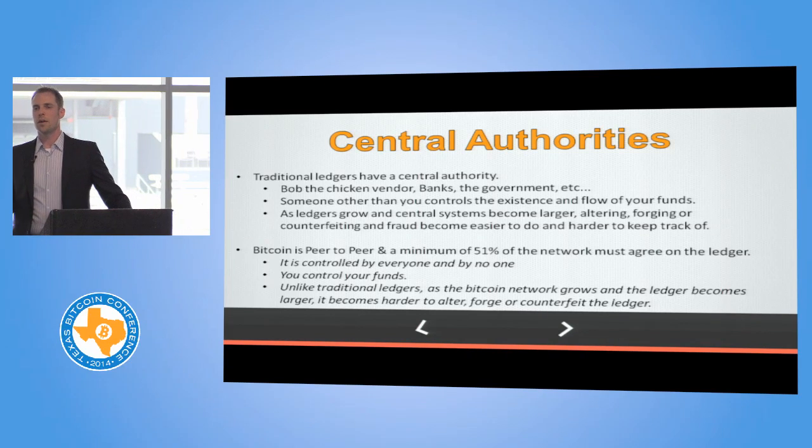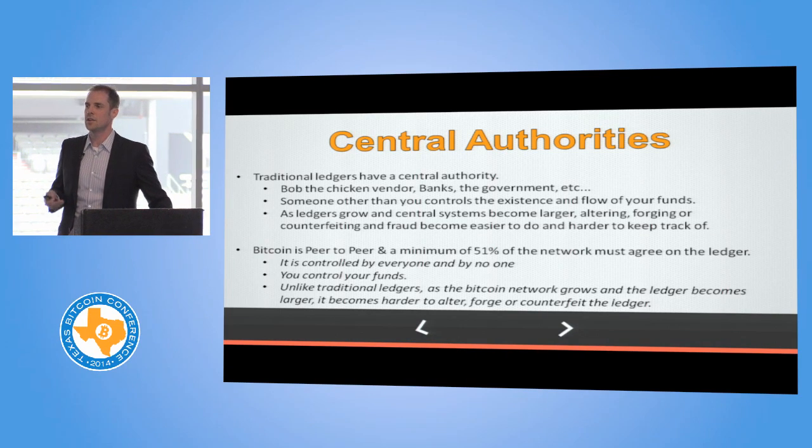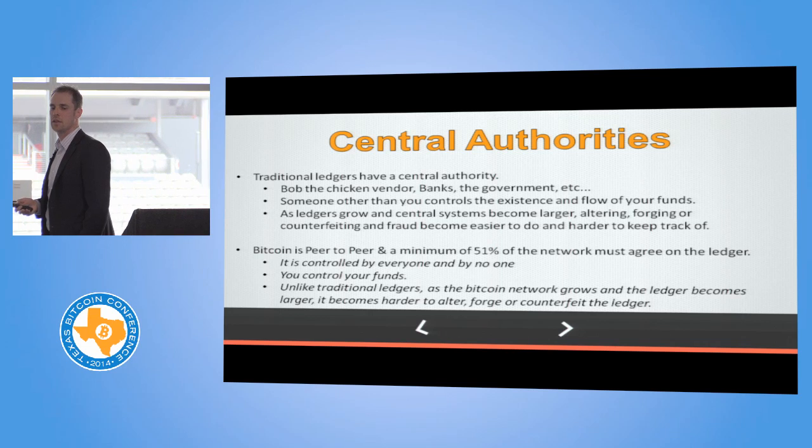Bitcoin does not suffer from this. It is a peer-to-peer network and a minimum of 51% of the network must agree on the ledger — not just a central authority. 51% of everybody mining Bitcoin and using Bitcoin must agree that this ledger is accurate. It's controlled by everyone and it's controlled by no one. So that puts you in control of your funds and nobody else in control of your funds.